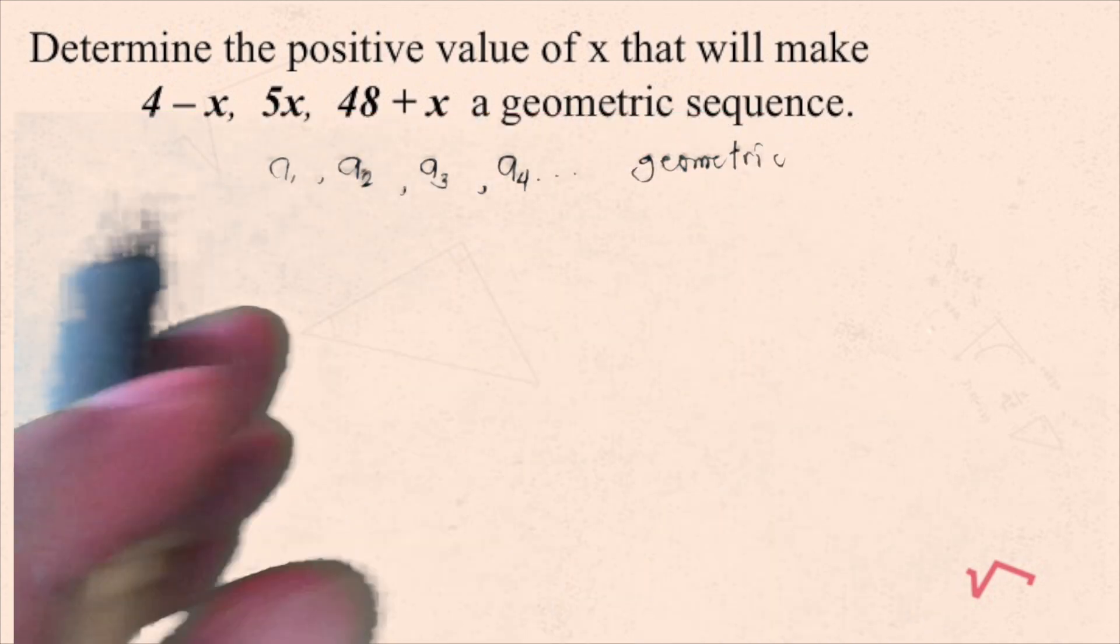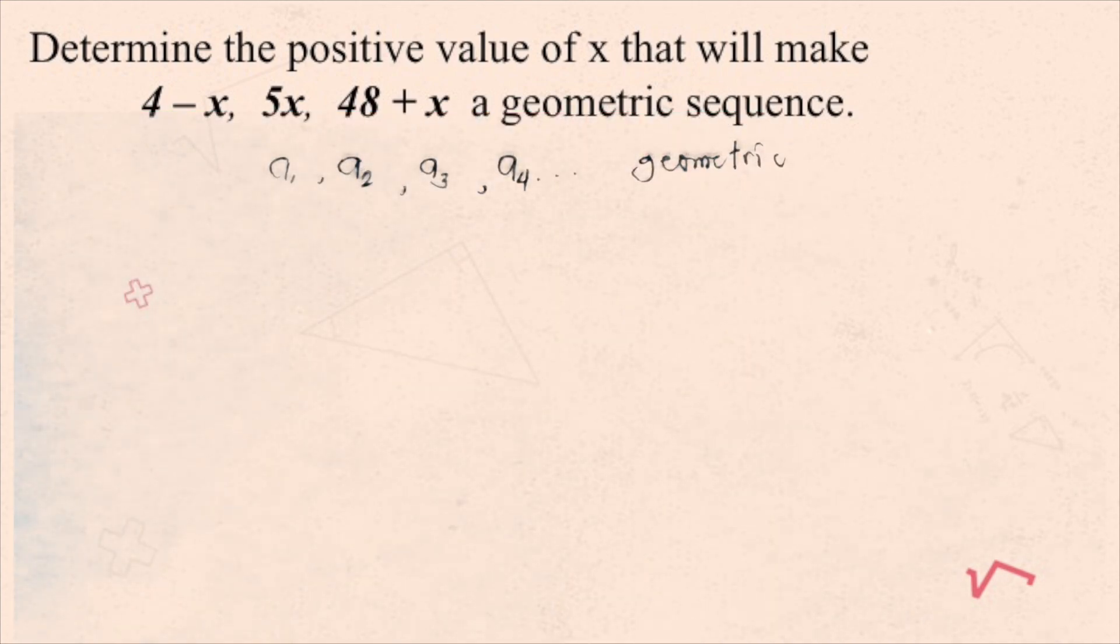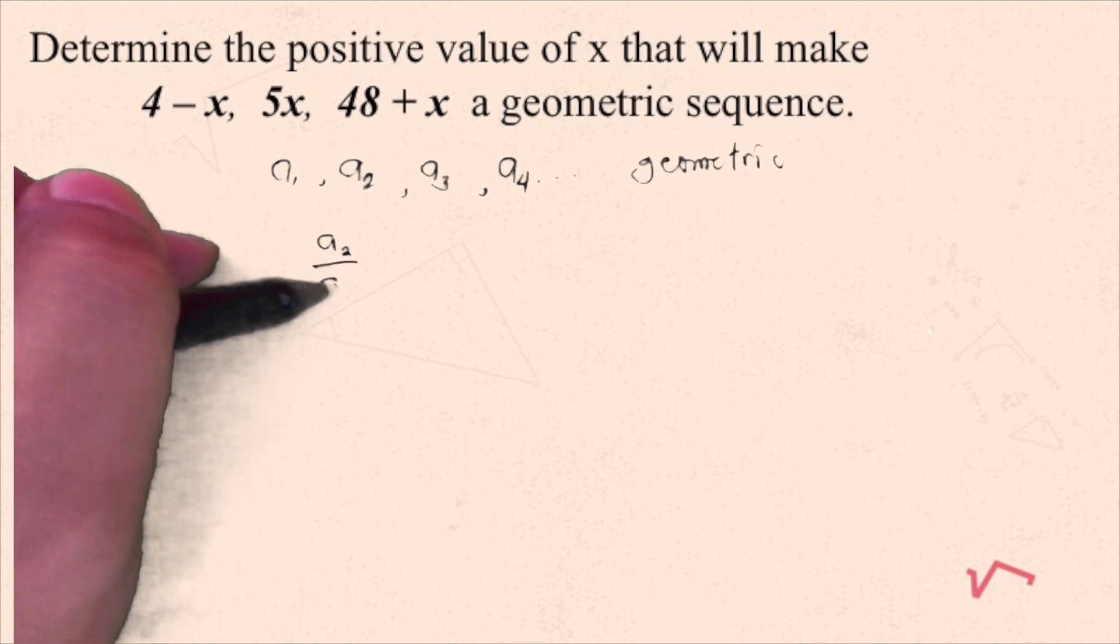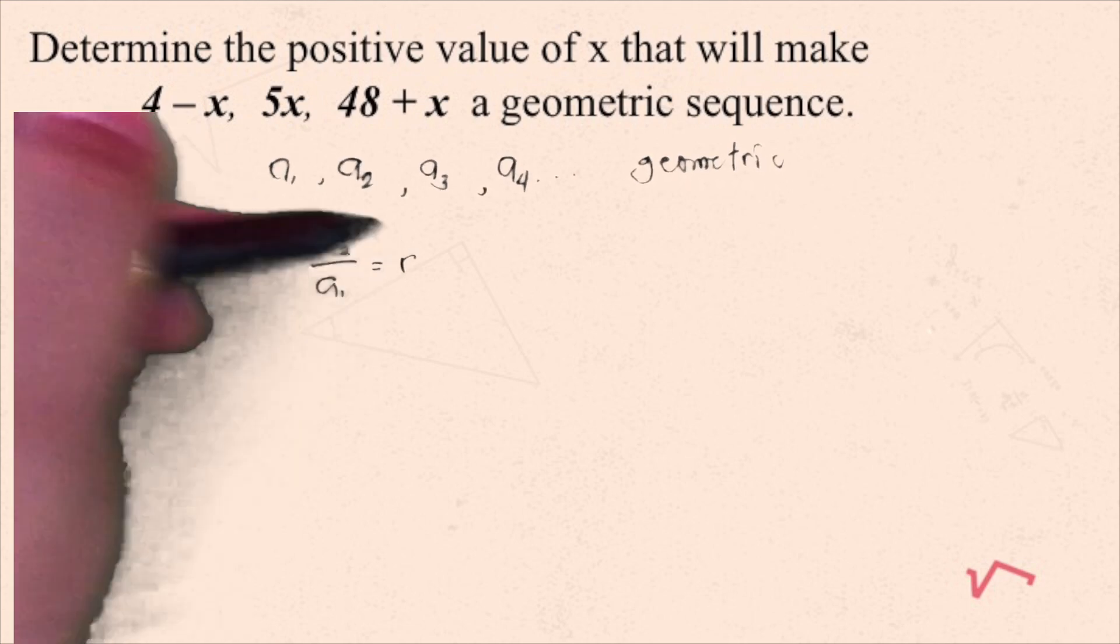Okay, so with this, using the definition of geometric sequence, we know that when we divide a sub 2 by a sub 1, we will get the common ratio.